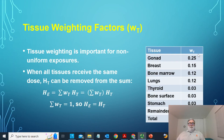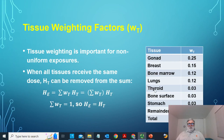The tissue weighting factors from that first report in 1977 are shown here. The gonads were judged to be very radiosensitive — part of that concern had to do with future generations. The breast, bone marrow, and other organs are also relatively radiosensitive. Notice that all the W_Ts add up to one. The remainder covers all other tissues not otherwise specified — the skin, spleen, and everything not mentioned — and their average dose is weighted at 0.3, chosen so that the total equals one.